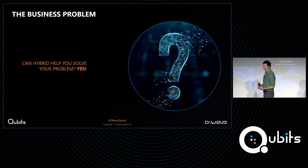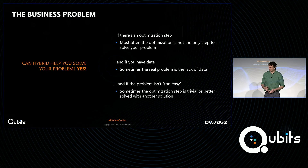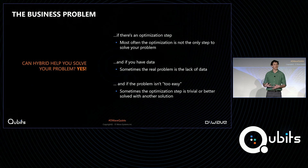There are a couple of caveats I want to toss on there. The first thing you'll need to know in order to determine whether hybrid can help you solve your problem is: is there an optimization step? The good news is that almost always in a business problem there is something to be optimized — some problem where you are looking for a high-quality, optimal solution. But if you don't have an optimization step, it's kind of hard to imagine how we might fit into that picture.